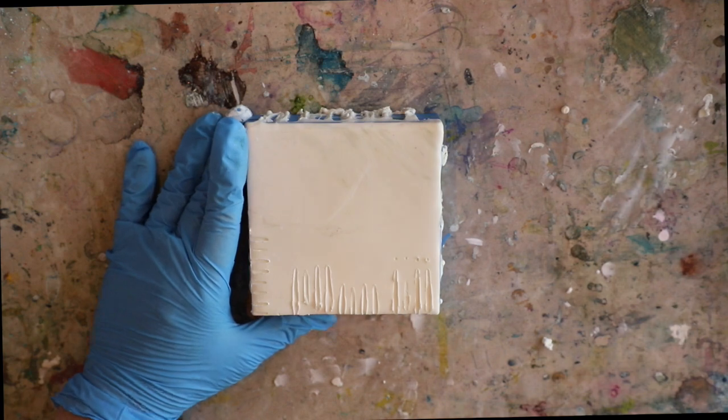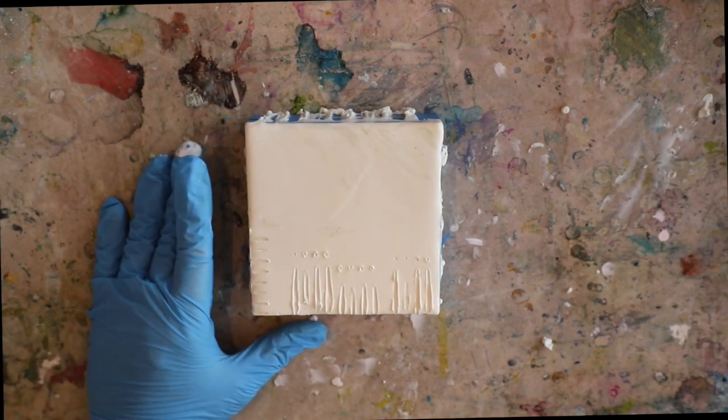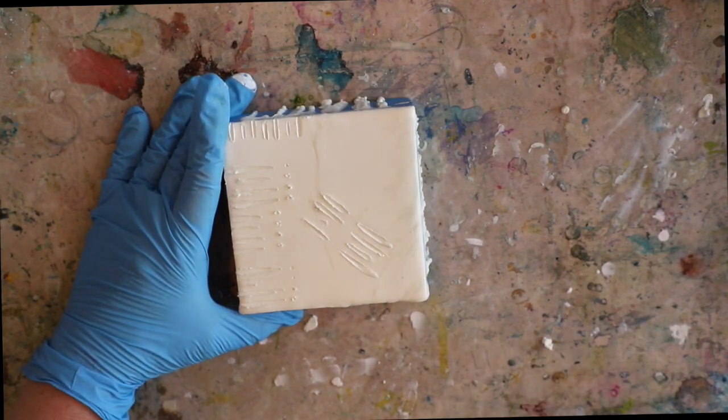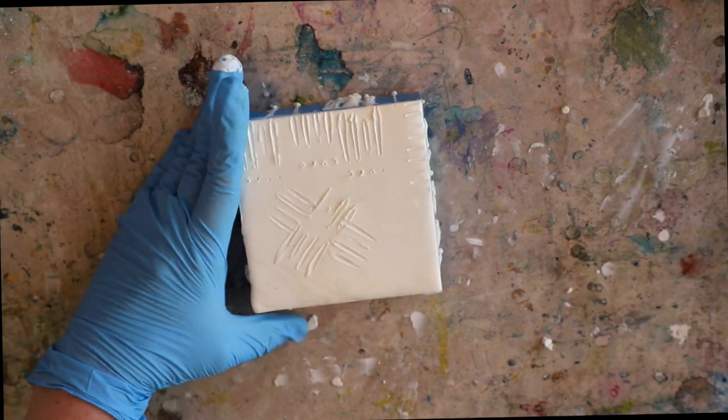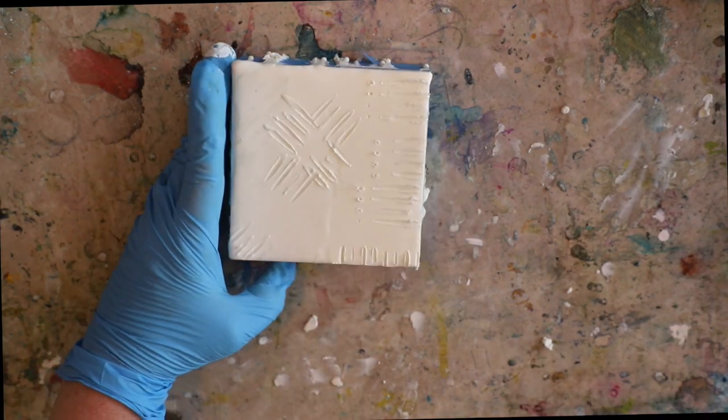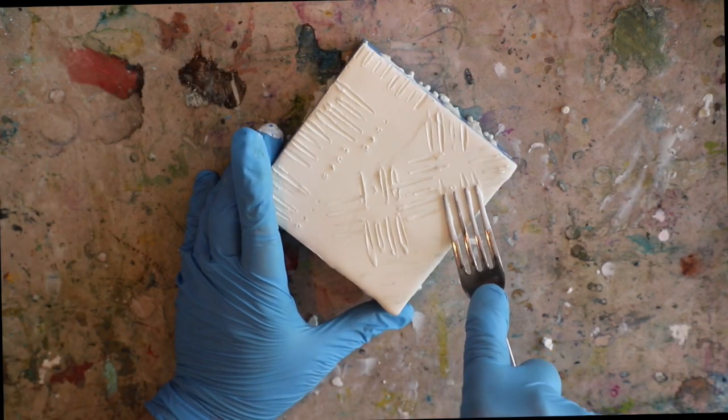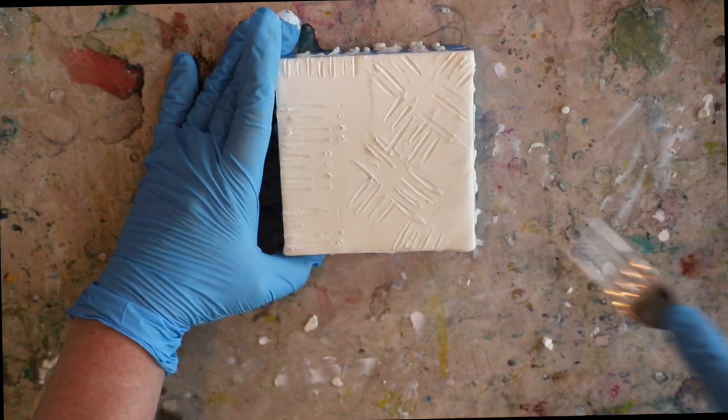Here I'm going to just play around with a few more marks and see what I come up with. Anything that I don't care for, or if I decide on one particular technique, which I do here at the end, I simply fuse the rest of it out. There's never any mistakes in encaustic. It's one of the great things about encaustic—if you don't like it, you can just fuse it right out and start over again.